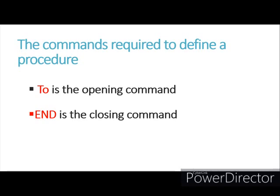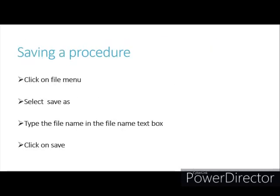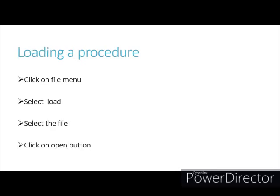Next, how to save a procedure. Saving a procedure is very simple. First, click on the File menu and select the Save As option. A Save As dialog box will appear. We can select the path, choose the drive and directory where we want to save the procedure, then type the file name in the file name text box, and click Save.